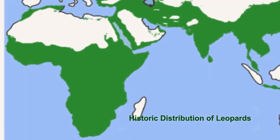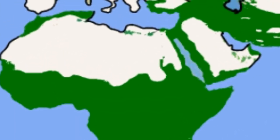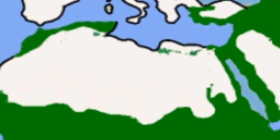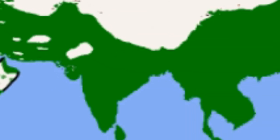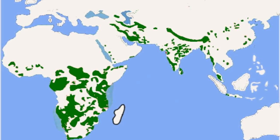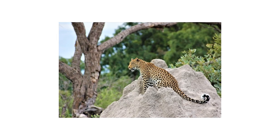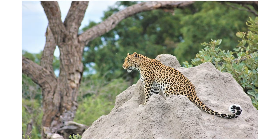In 1750, leopards occupied all parts of Africa south of the Sahara and also parts of north and northeastern Africa, and extended from Asia Minor to Central Asia and India to China and Manchuria. By 2019, leopards have lost at least 75 percent of their previous range, but still there is a significant amount of leopards left in the wild.